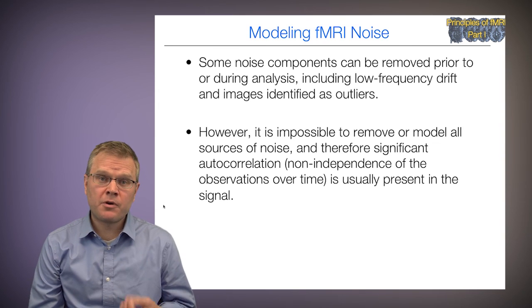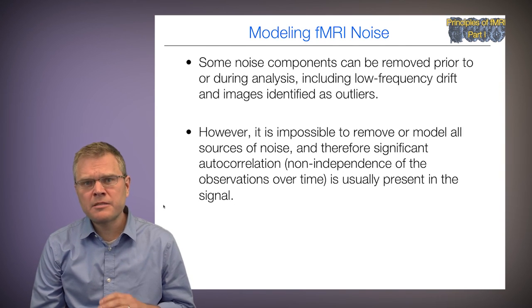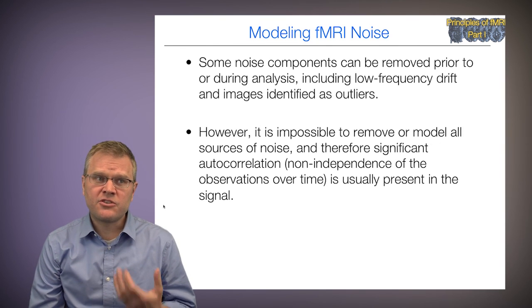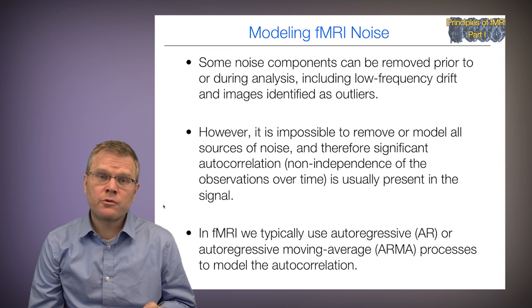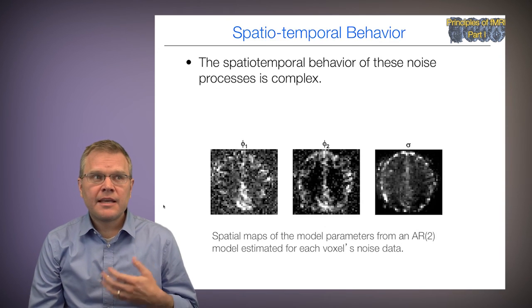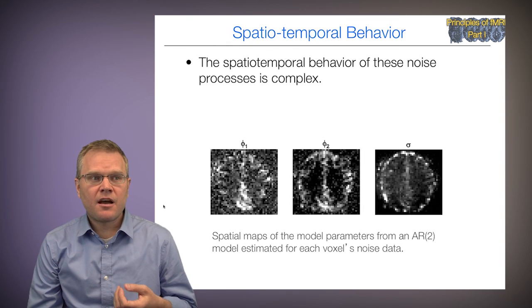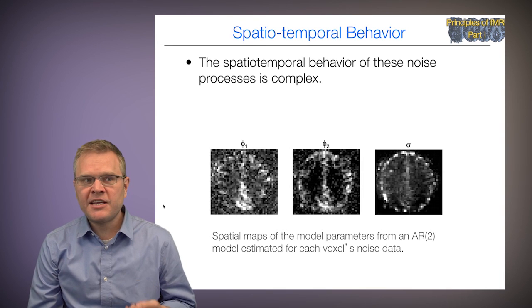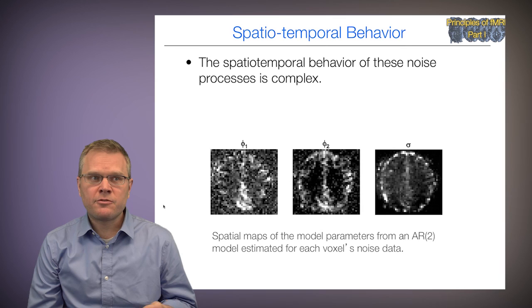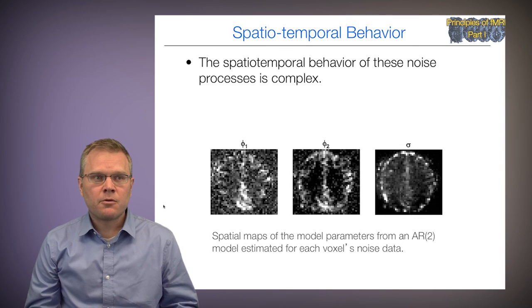Some noise components can be removed prior to or during the analysis, including things like low-frequency drift or images identified as outliers. However, it's impossible to remove all sources of noise, and therefore significant autocorrelation is usually present in the signal. In fMRI, we typically use autoregressive AR or autoregressive moving average ARMA processes to model the autocorrelation. The spatial-temporal behavior of these autocorrelations is complex — here I'm showing spatial maps of the model parameters from an AR2 model estimated for each voxel's noise data. The values differ across the brain, and you can make out structure and differences between different tissue types. So interestingly, the noise won't be constant across the brain but will depend on different tissue types and location.